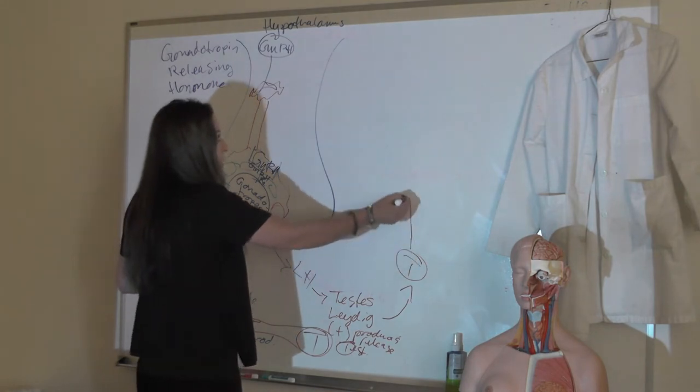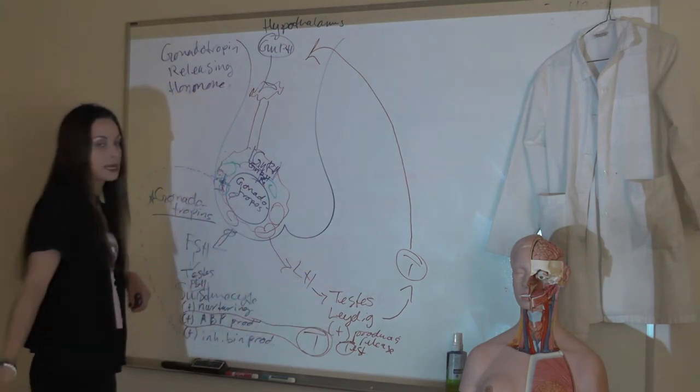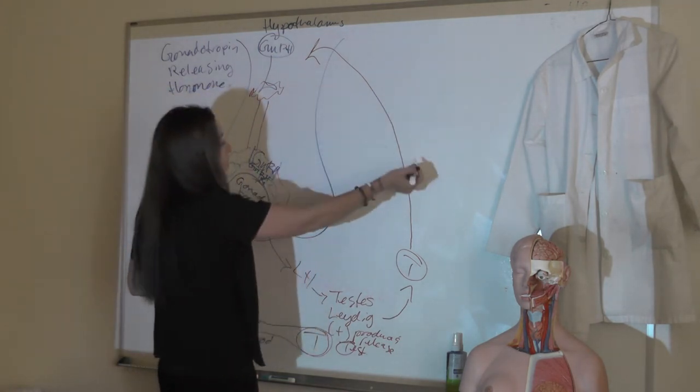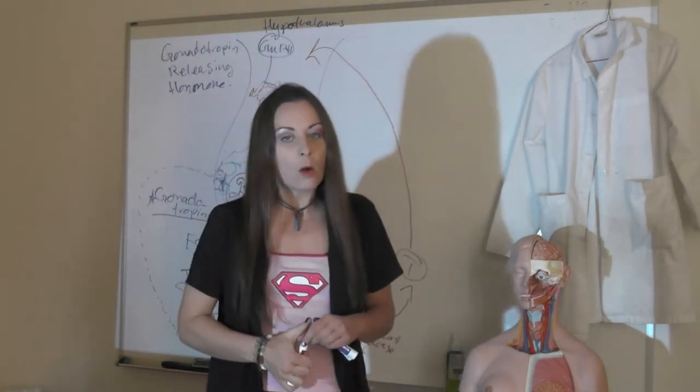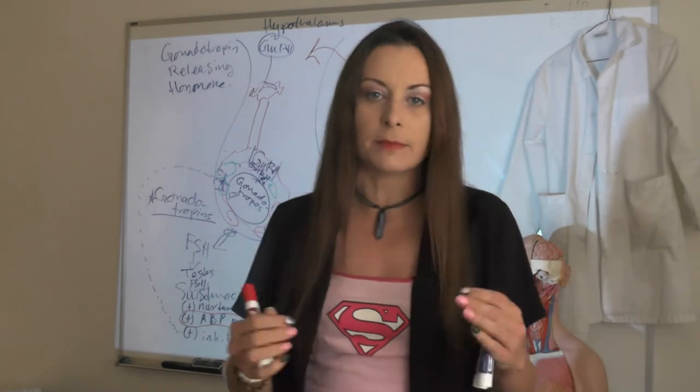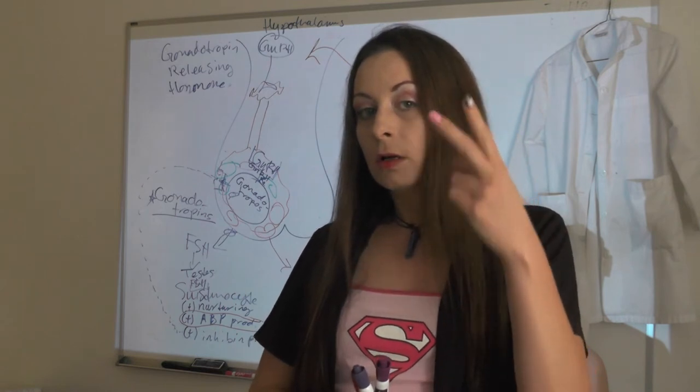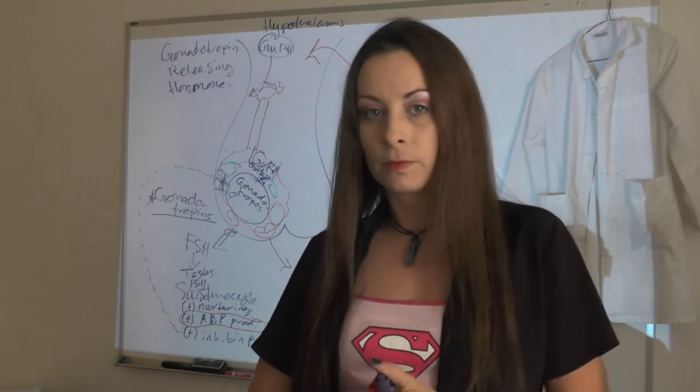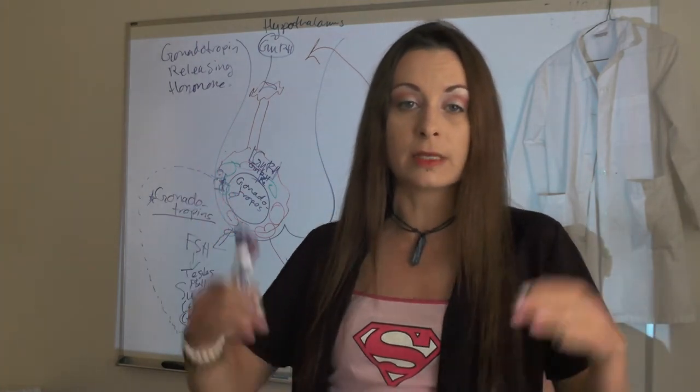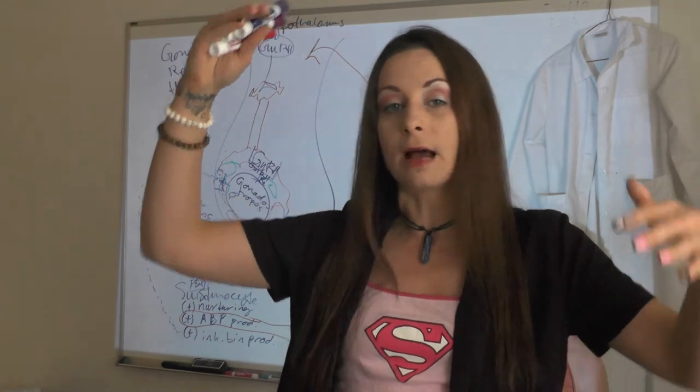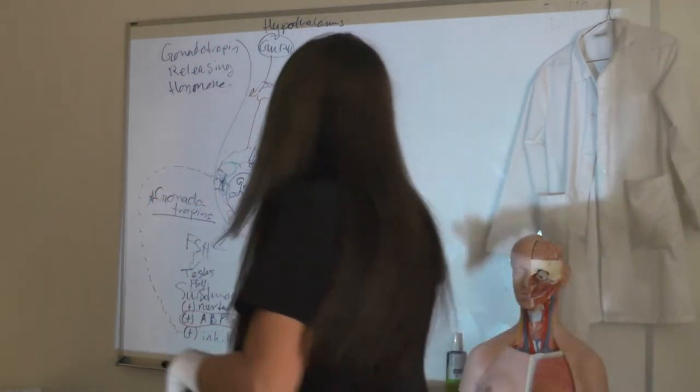In order for testosterone to stimulate spermatogenesis, it's got to stay high in the testes, and it's able to stay high because androgen-binding protein binds to it and keeps it high there. More testosterone is going to enter the blood and stimulate all the other things - the development of secondary sex characteristics, all of our male behavioral characteristics, all the things we associate with being male are stimulated by testosterone and another androgen, 5-DHT. The hypothalamus is going to be paying attention to these levels of testosterone in the blood.